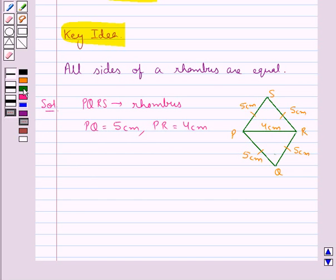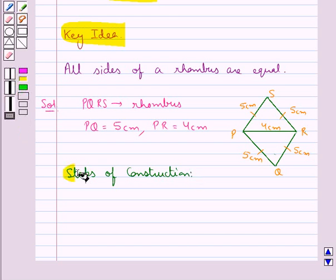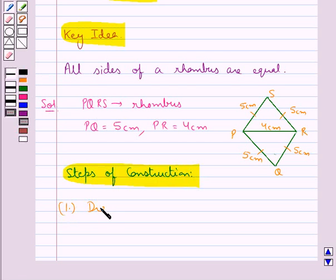Let's do this construction step by step. First of all, we draw a line segment PR equal to 4 cm.